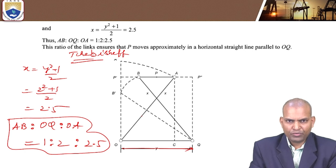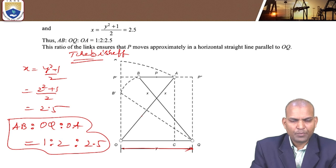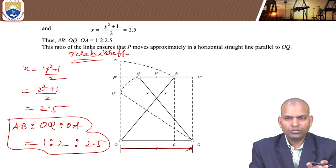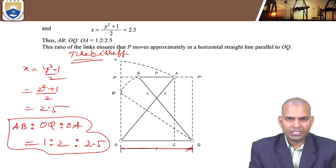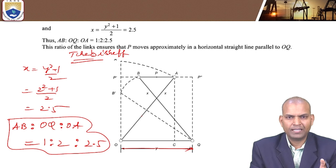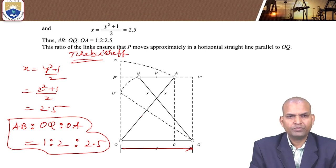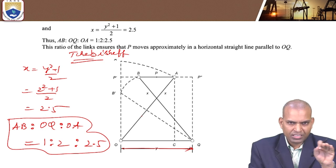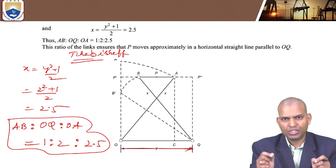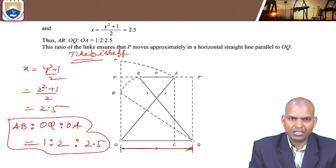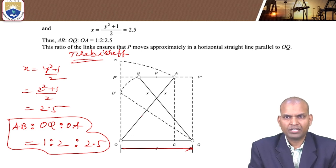All the mechanisms studied previously give either vertical or approximate straight line motion. The Chebyshev mechanism gives a horizontal straight line. If you change the orientation of other mechanisms like the grasshopper or Watt mechanism, you can also get horizontal straight lines. The Chebyshev mechanism is an exact straight line motion mechanism. Thank you — like, share, and subscribe; hit the bell icon for more updates.